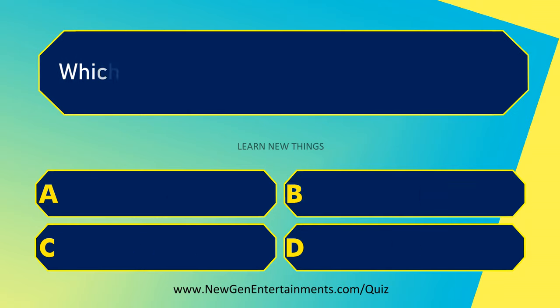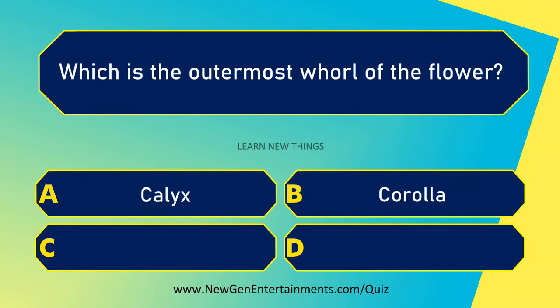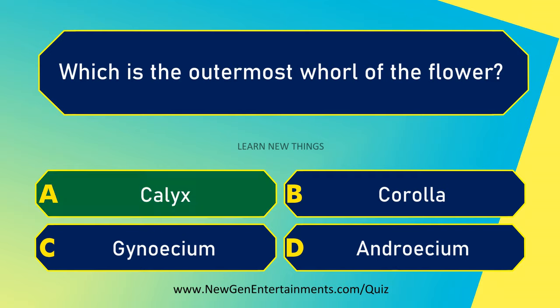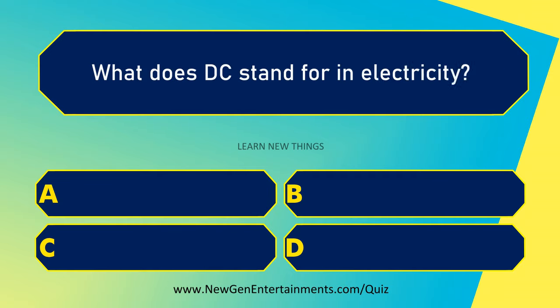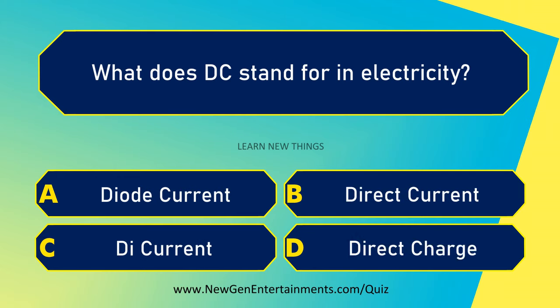Which is the outermost wall of the flower? Calyx. What does DC stand for in electricity? Direct Current.